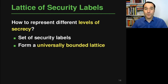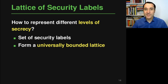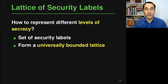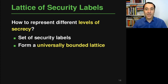Let's get started with the question of how to define different levels of secrecy. So far in the examples from the first part of this lecture we've had two levels of secrecy: public and private. We can generalize this idea by looking at a lattice of security labels. This lattice consists of a set of security labels combined in a way that they form a so-called universally bounded lattice.